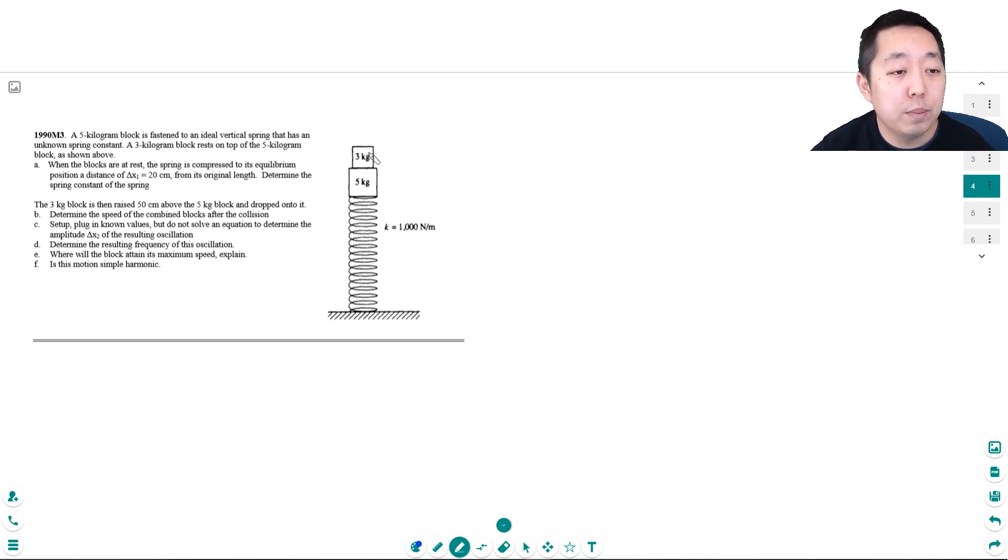So we have a five kilogram block fastened to an ideal vertical spring that has an unknown spring constant. A three kilogram block rests on top of the five kilogram block as shown above. When the blocks are at rest, the spring is compressed to its equilibrium position distance delta x1, 20 centimeters from its original length. Determine the spring constant of the spring.